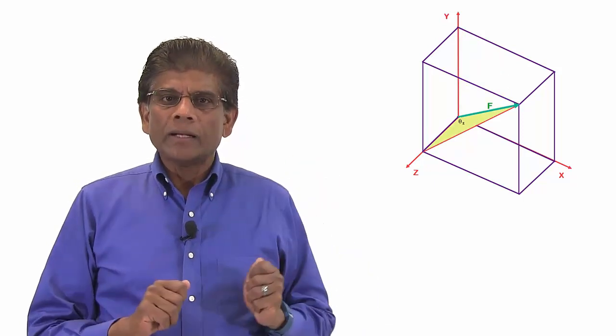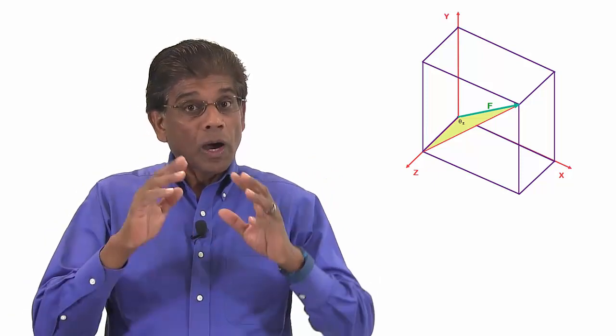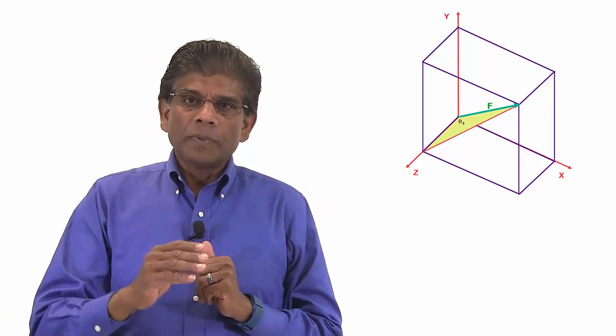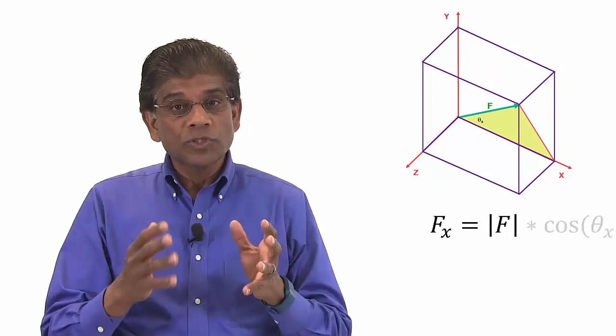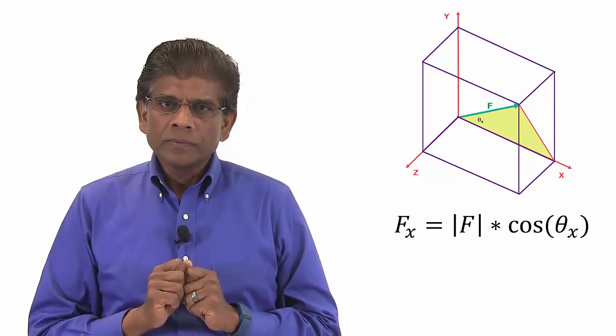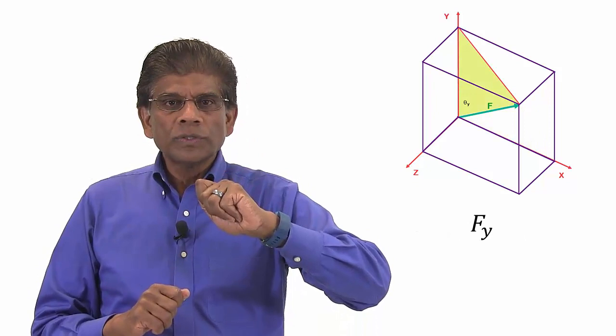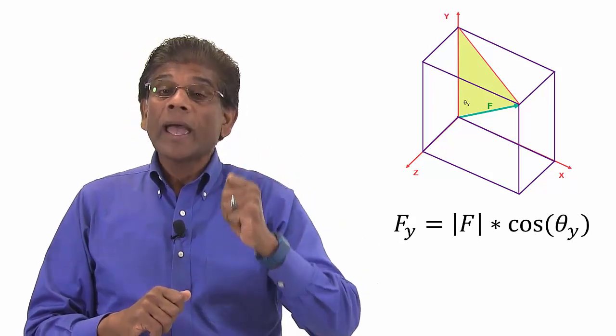If you know these three angles, you can easily find the components of this force on each axis. For example, the x-component of this force is the magnitude of this force times the cosine theta sub x. You can do this for each axis. The y-component of this force is the magnitude of this force times the cosine theta sub y, and so on.